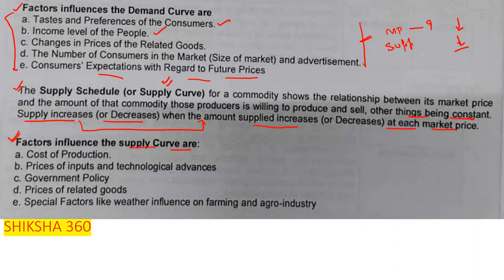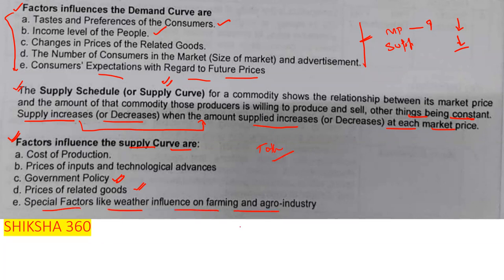The factors that influence the supply curve are: cost of production, price of inputs and technology advances, government policies, price of related or complementary goods, and special factors like weather influence on farming and agro industry.